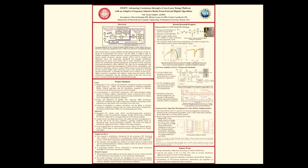This video is an invitation to stop by the poster titled 'Advancing Coexistence Through a Cross-Layer Design Platform with an Adaptive Frequency Selective Radio Front End and Digital Algorithms.' This research aims to create a platform and first hardware prototypes for the co-design of next-generation RF receivers that have the ability to suppress both in-channel as well as adjacent channel interferers without compromising the reception of desired signals. We are developing frequency selective limiters — devices that can distinguish and attenuate interference characterized by a power level above a certain threshold. We are also integrating these frequency selective limiters with CMOS integrated circuits and digital signal processing methods for enhanced interference resilience of receivers operating in crowded spectrum environments.